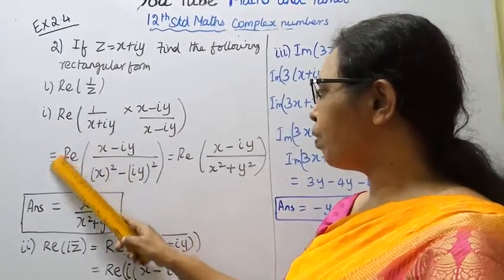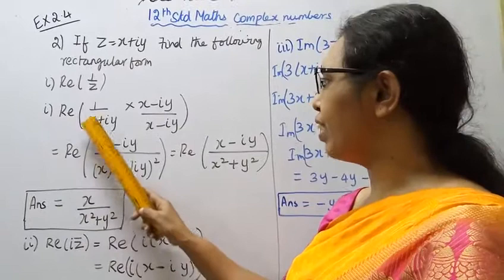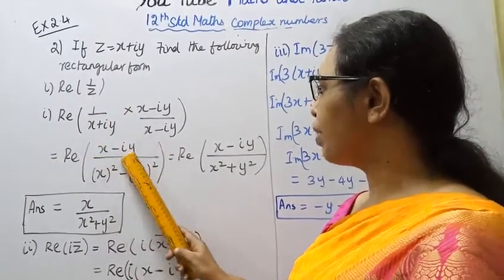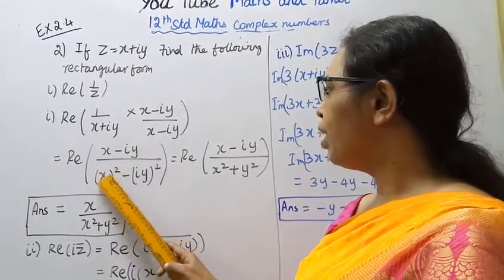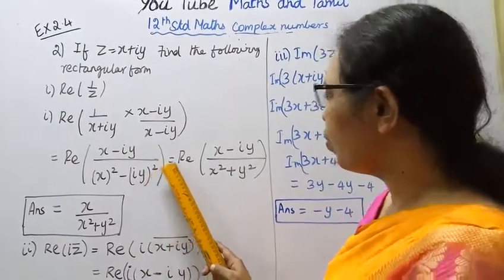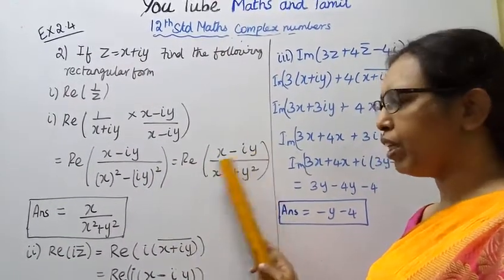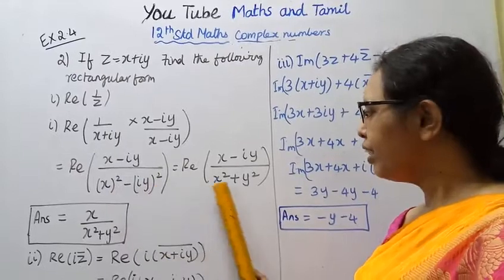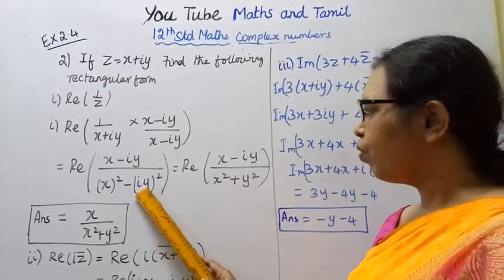One by Z: multiply by the conjugate, x minus iy. So we get 1 times (x minus iy) over (x plus iy)(x minus iy). Using the formula a plus b times a minus b equals x squared.